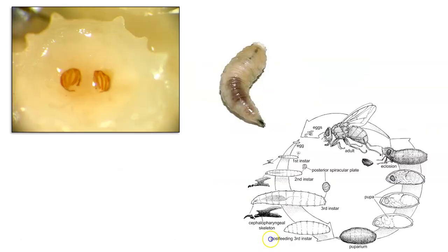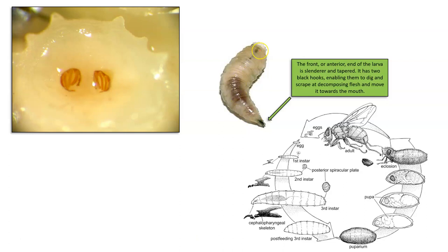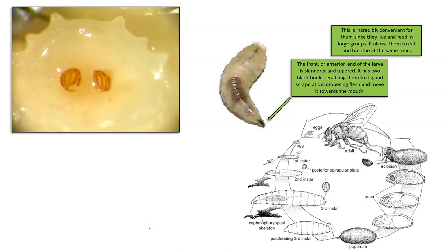Let's go into a little more about larva anatomy. The front or anterior end of the larva is slender — notice there's a fatter end and a slender end, and the slender tapered end is actually the front. It has two black hooks that enable the larva to dig and scrape at decomposing flesh and also to move the decomposing tissue towards the mouth. It's convenient for them to feed in groups — they have strength in numbers, and they are able to eat and breathe at the same time.